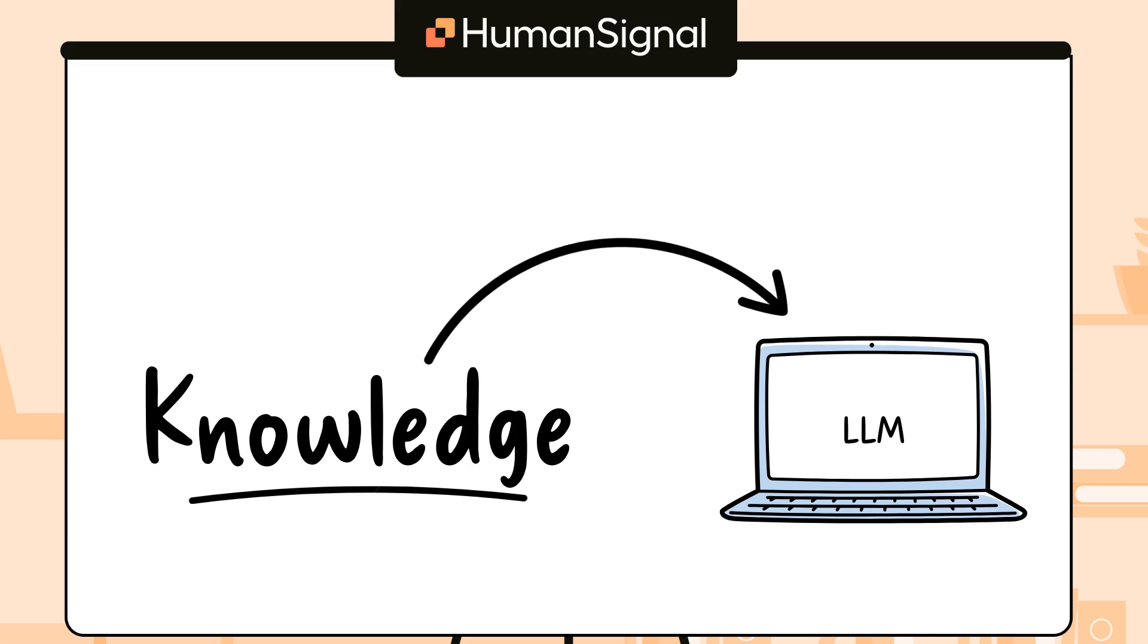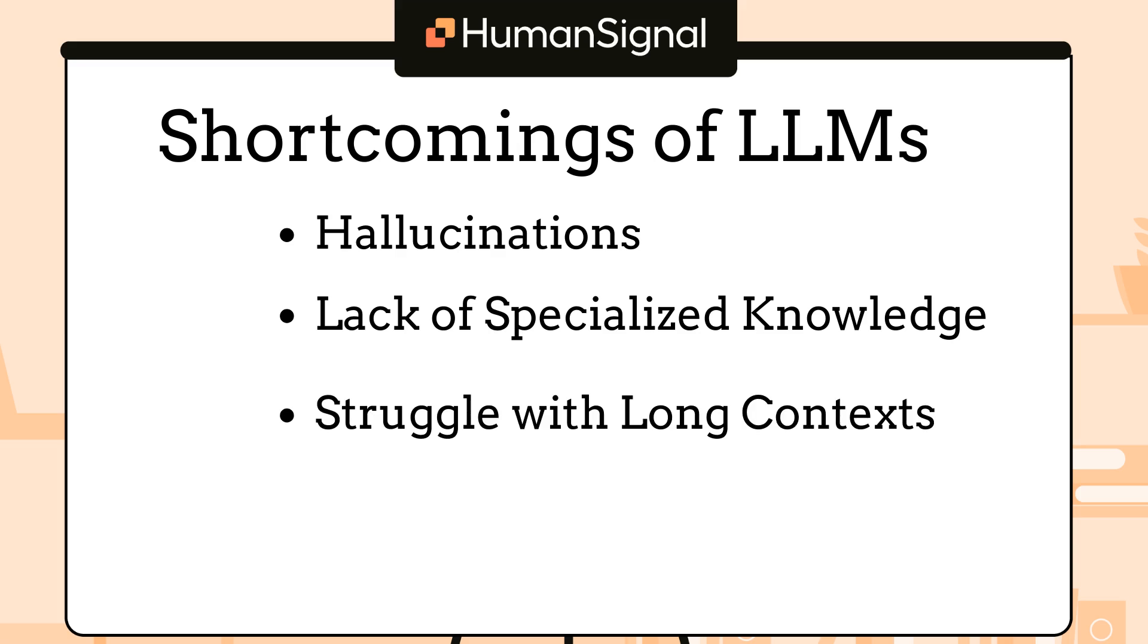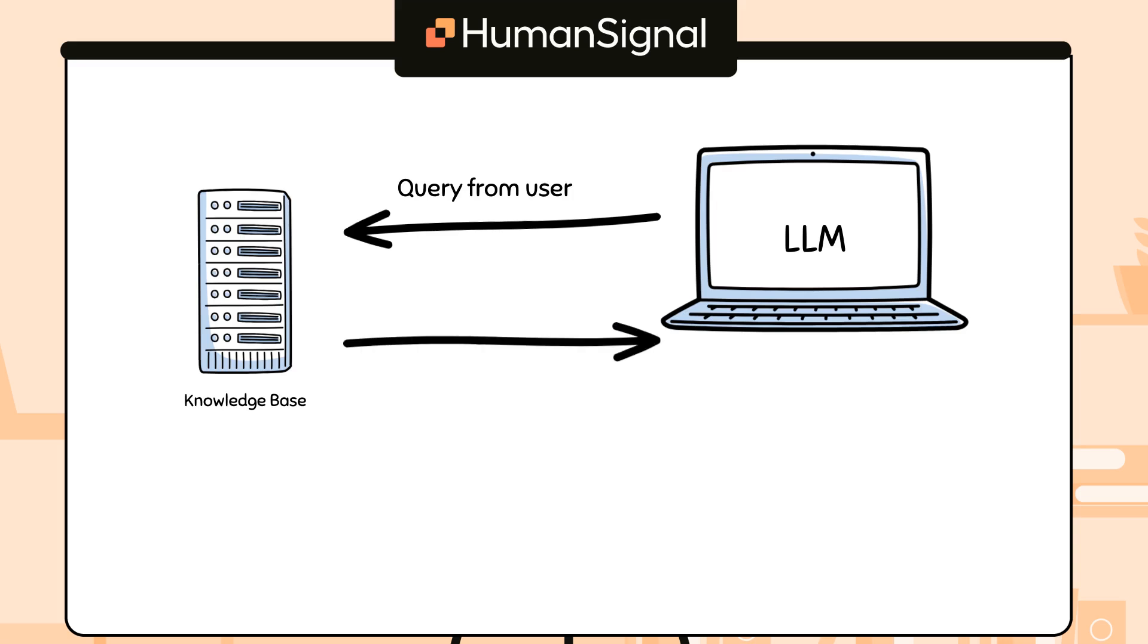Why would you want to do this? LLMs themselves have some well-known limitations. They can hallucinate, lack recent or specialized knowledge, and often struggle with long context windows. RAG helps address these issues by dynamically retrieving relevant information from a connected knowledge base, instead of relying on the LLM's pre-trained knowledge.